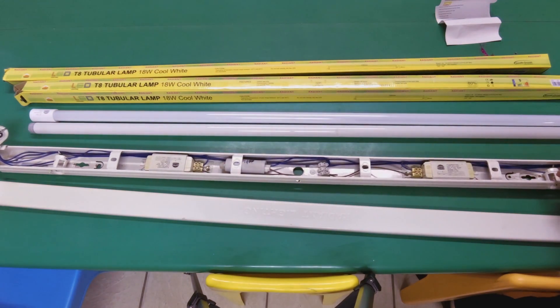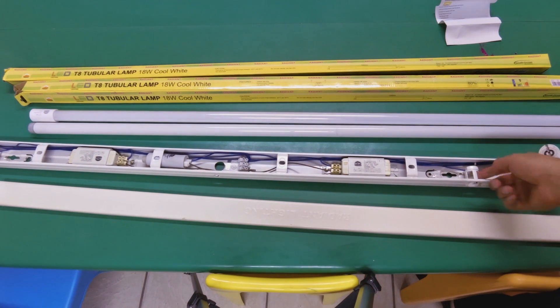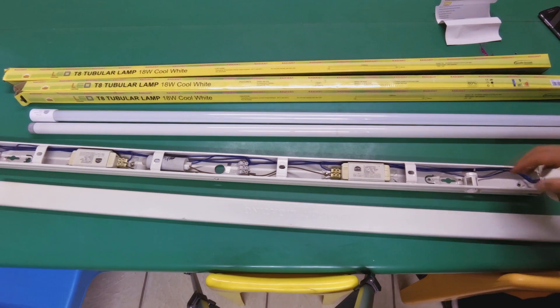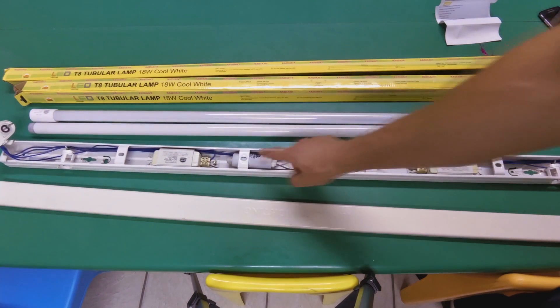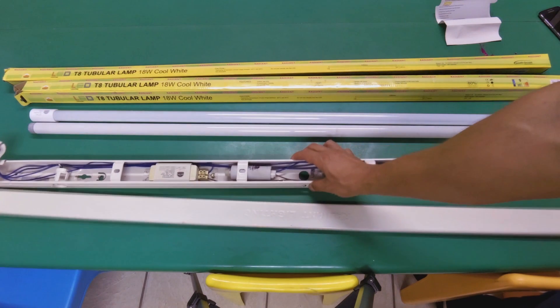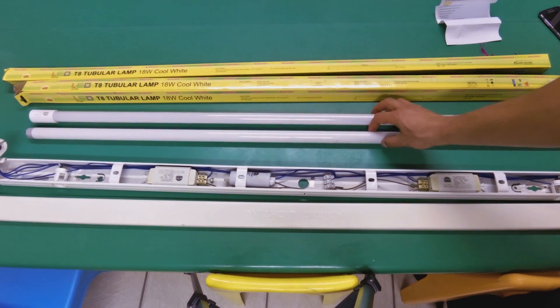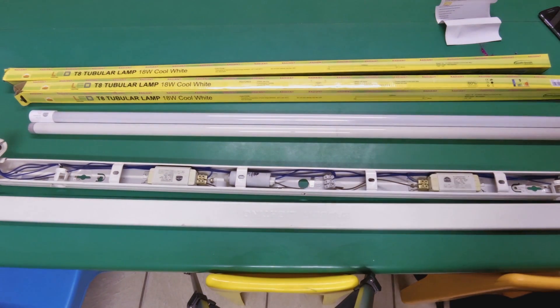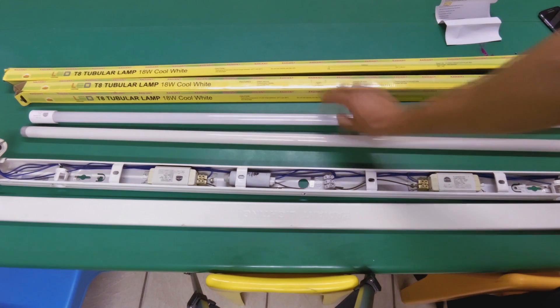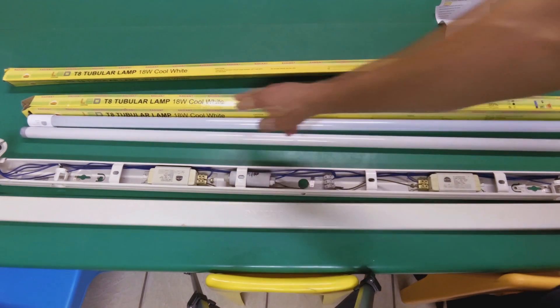...and there's actually a starter that would be here. And if it was an electronic ballast, then we wouldn't have this, but it would still need a starting circuit. Now the main reason is the lifespan and the saving of electricity. As I said, the original fluorescent light is 35 watts, while the LED is only 18 watts.